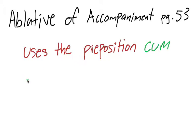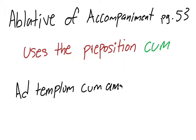So for instance, if we were to say ad templum cum amicis ambulo. That sentence would translate as ambulo, I walk,